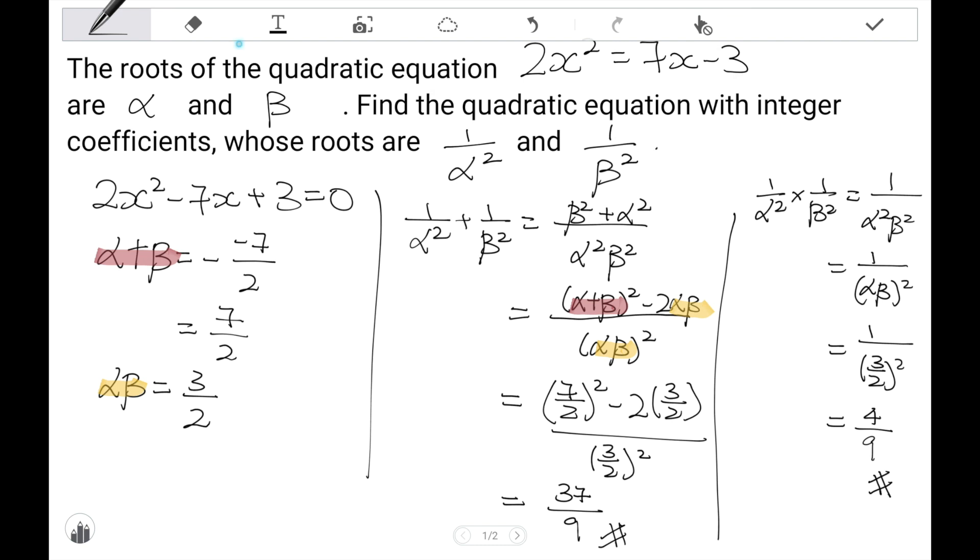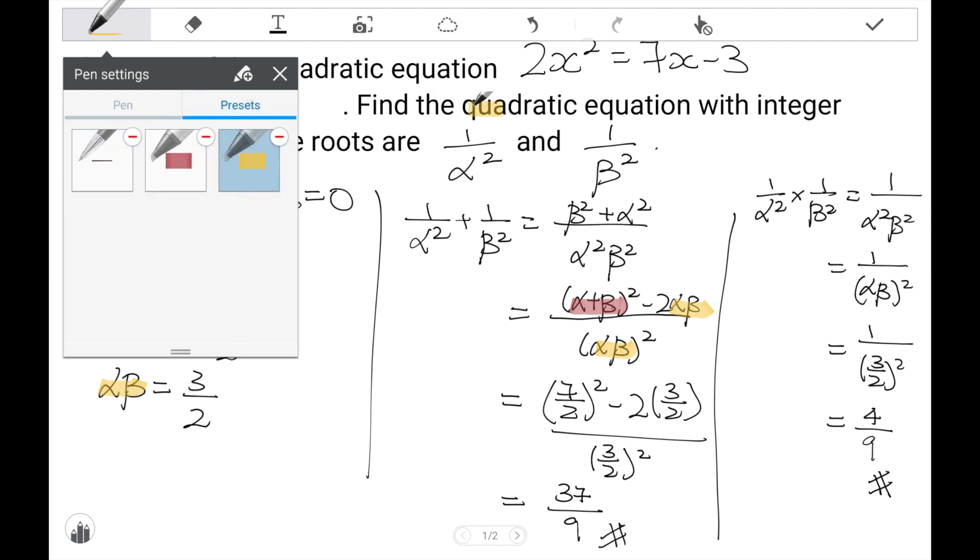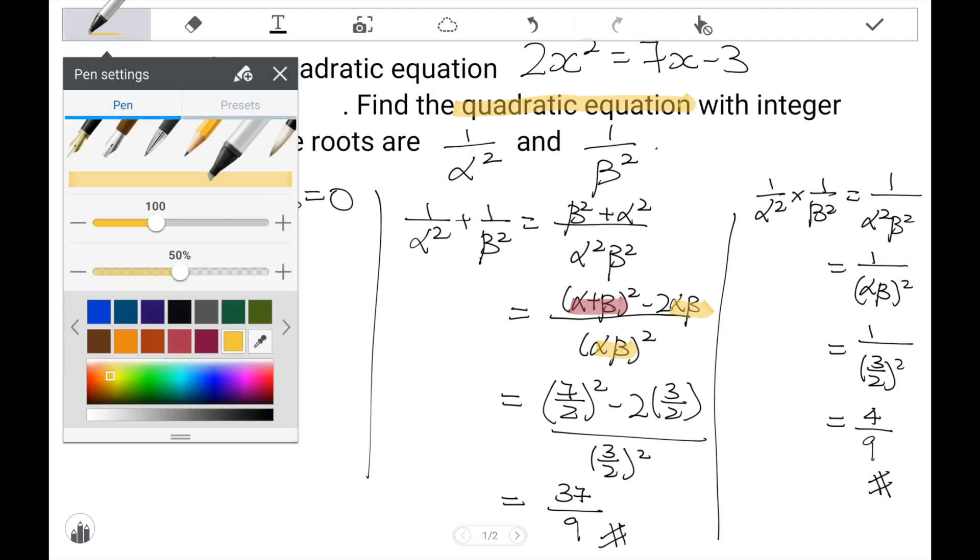The last step that I need to do is to find out what is this new quadratic equation. Of which, I need to remember these two values, 37 over 9 as the sum, 4 over 9 as the product, and substitute it into the final equation. Let me do that on the next page.